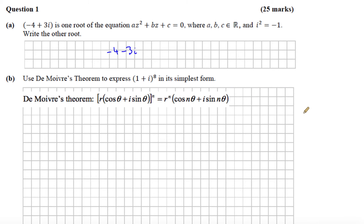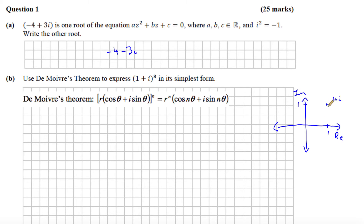If we imagine the number 1 plus i on the real-imaginary axis — this is the real axis and here's the imaginary axis — then 1 plus 1i would be at position 1 on the real axis and 1 on the imaginary axis. To change it to polar form, we need the value r, which is the modulus — the distance from the origin. We also need theta, the angle that the modulus makes with the positive real axis.